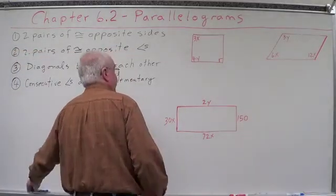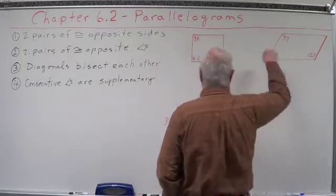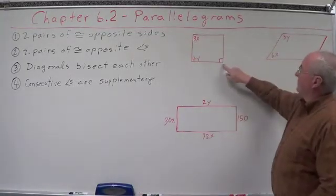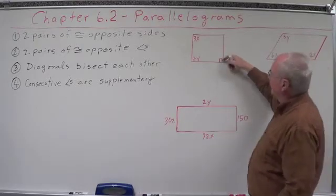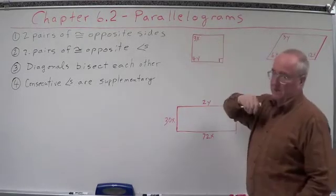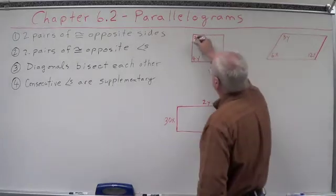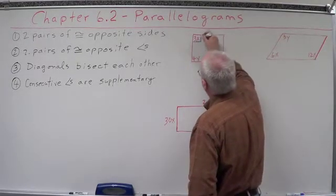Alright, so let's go over here and try to work on this problem. These are all parallelograms. And we're told that this is a parallelogram which has a right angle. Well, if this is a right angle, what does this one have to be? Well, it's also got to be a right angle, doesn't it? Why? Because it has two pairs of opposite angles.